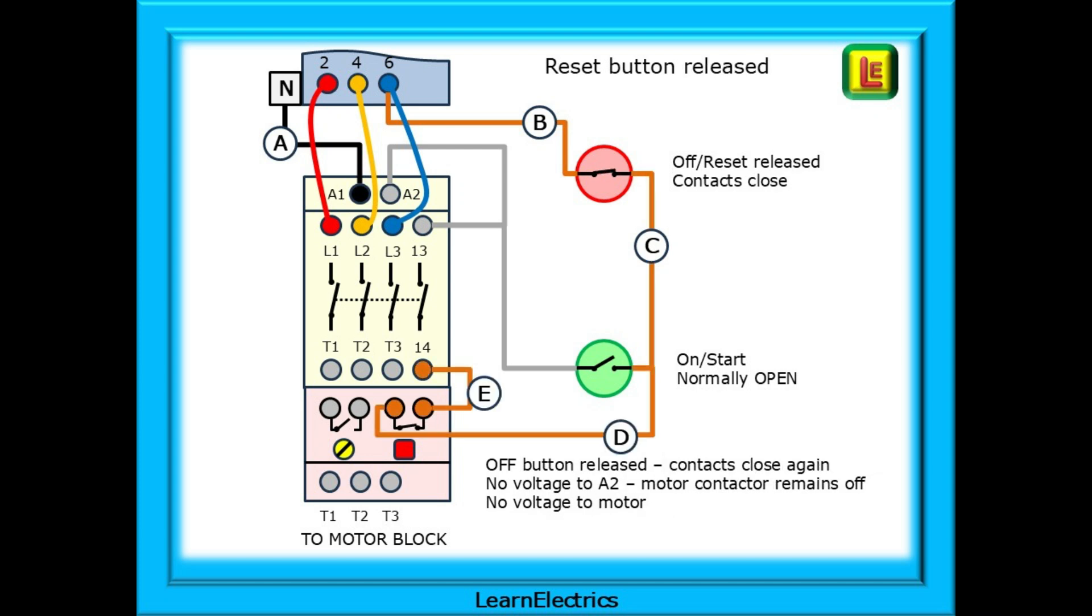When the off button is released the switch resorts back to being a normally closed switch. 230 volts passes along wires C, D, and E as far as terminal 14 but that is where it stops. Voltage cannot reach terminal A2 so the contactor remains in the off or de-energized state and the motor remains off. To make the motor start again we would need to press the green on or start button.